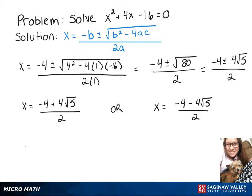And then just to clean that up a bit and simplify, we'll end up with x equals negative 2 plus 2 root 5 or negative 2 minus 2 root 5.